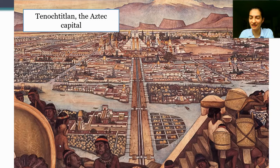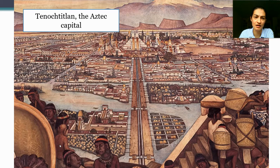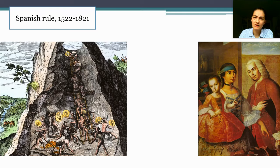They have a sewage system at a time when people in London, for instance, are still dumping waste into the street or into the river from which they get their drinking water. So the Aztecs are a pretty impressive civilization, but crucially they don't have gunpowder, and they'll be conquered by Hernán Cortés and Spanish conquistadors who arrive in 1519 and complete that conquest by 1522.